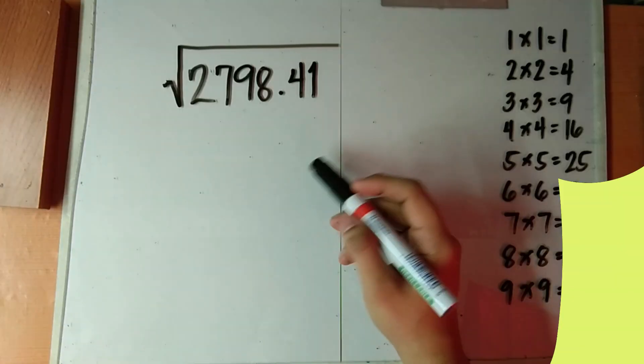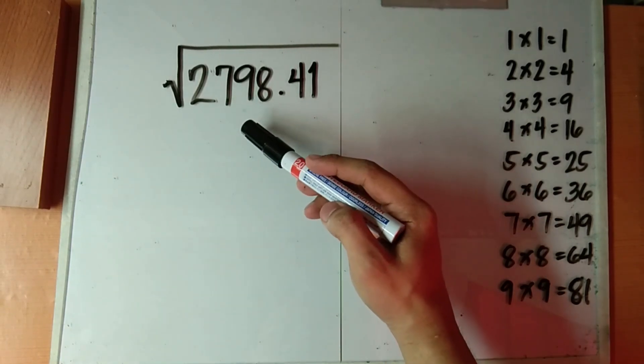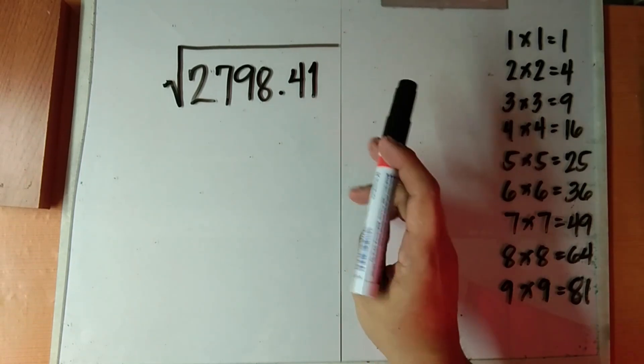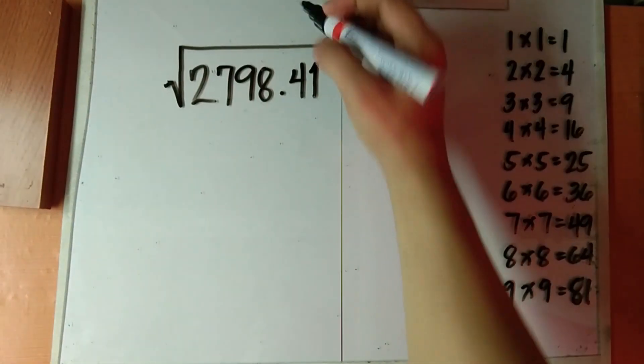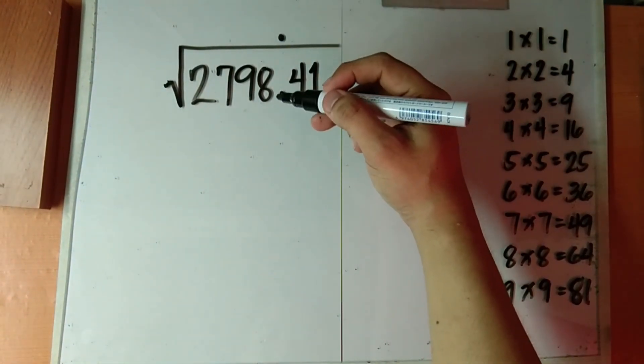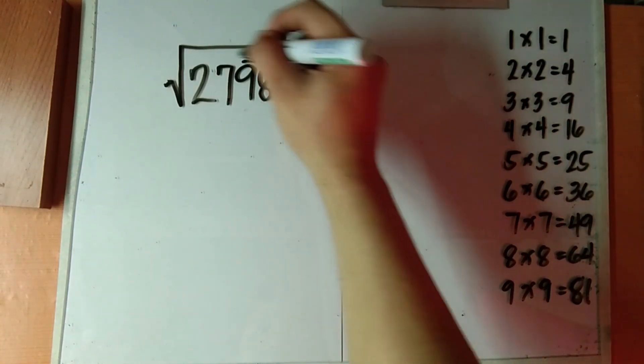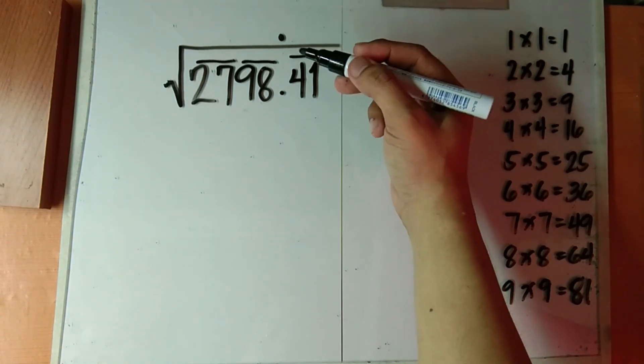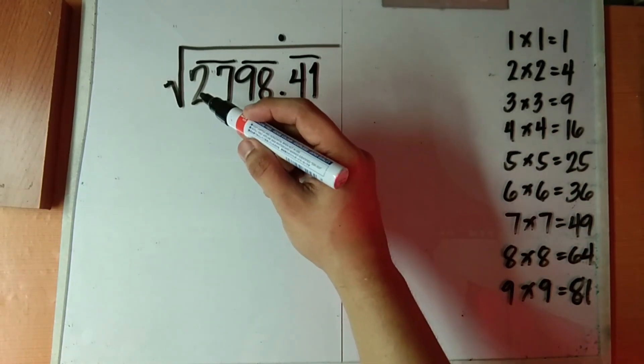For our second example, find the square root of 2798 and 41 hundredths. First locate the decimal point, then place it on top of the radical sign. Next, group the digits by 2's from the decimal point. Now since we have 3 groups here, expect that the root is a 3 digit number.